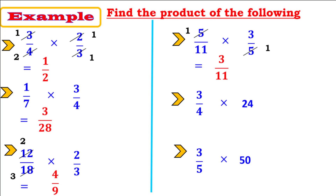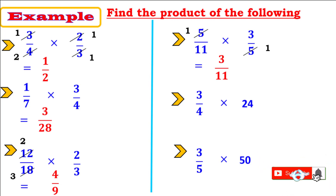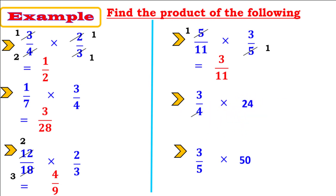Next: 3 over 4 times 24. Here we have a fraction times a whole number. To multiply a fraction by a whole number, find the common factor between the denominator of the fraction and the whole number. The denominator is 4 and the whole number is 24 — common factor is 4. Divide: 4 divided by 4 equals 1, 24 divided by 4 equals 6. Multiply the remaining factors: 3 times 6 equals 18.